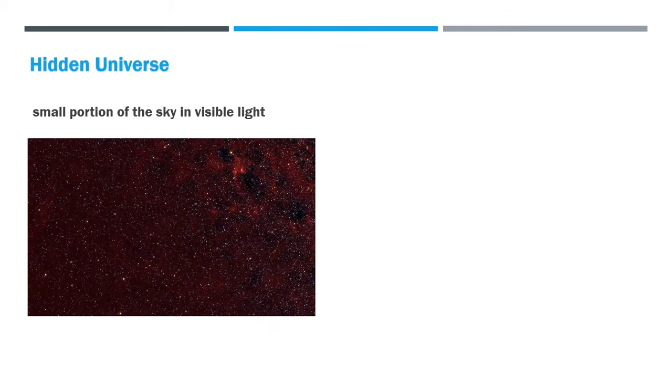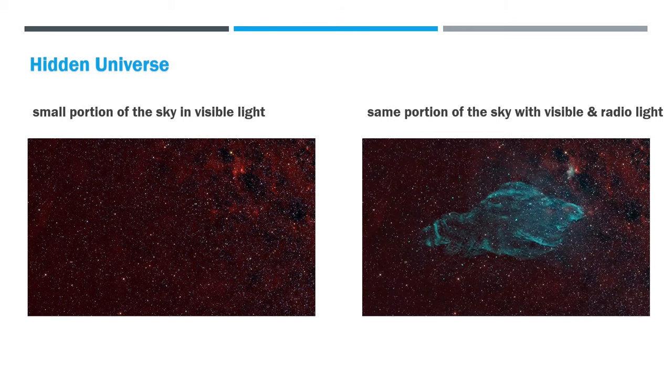Moving on guys, there is a hidden universe out there which we just cannot completely see with our eyes. Radio astronomers detect far away stars and galaxies with radio waves at the 3 kHz and 900 GHz frequencies. On the left, you can see a small portion of the sky in visible light. And to the right, this is the exact same part of the sky with visible plus radio light.